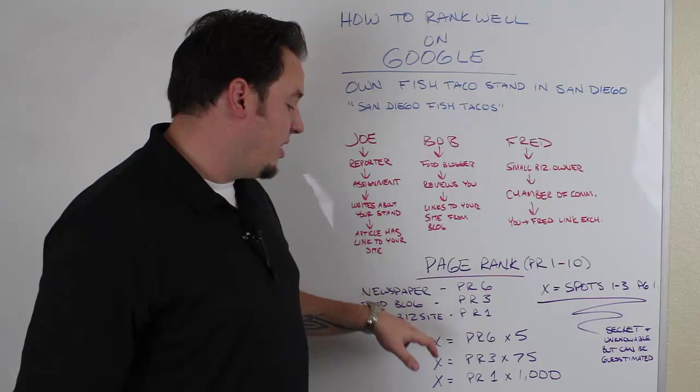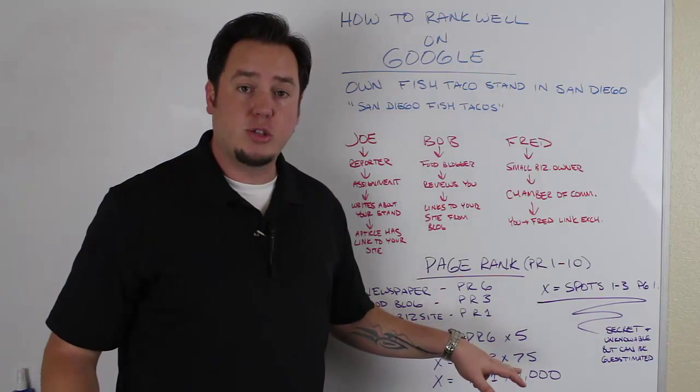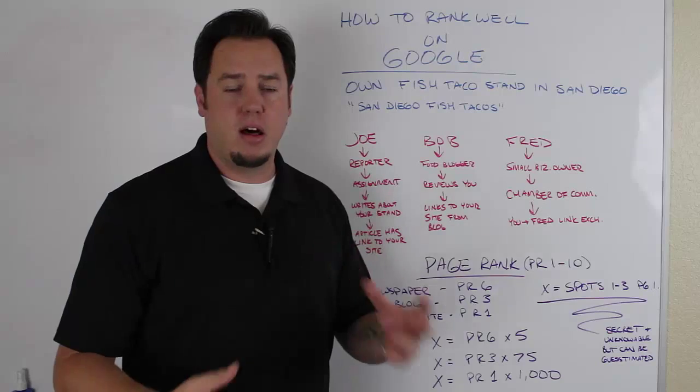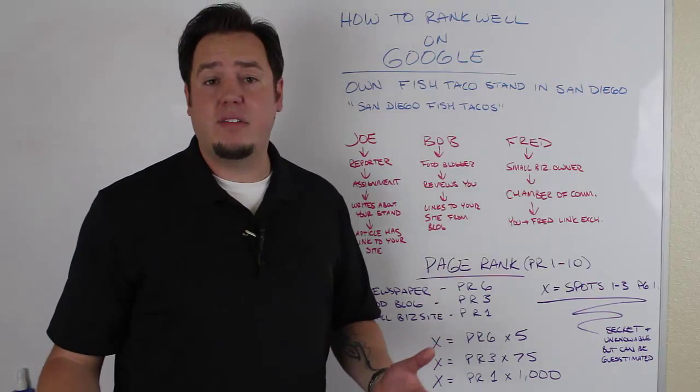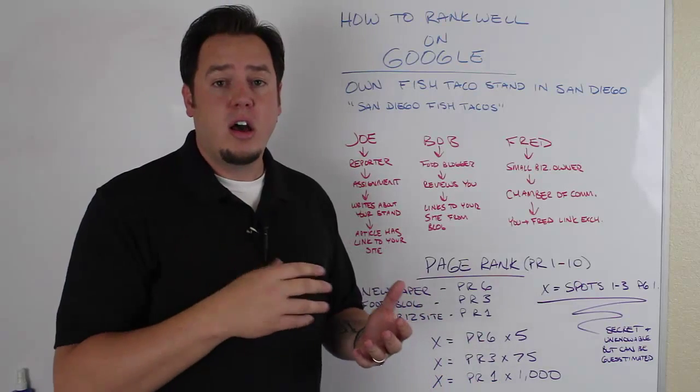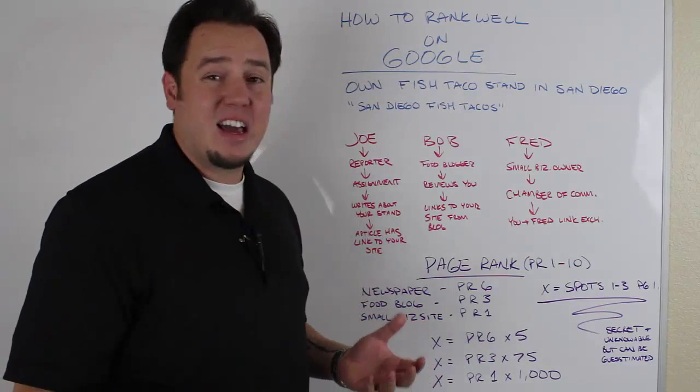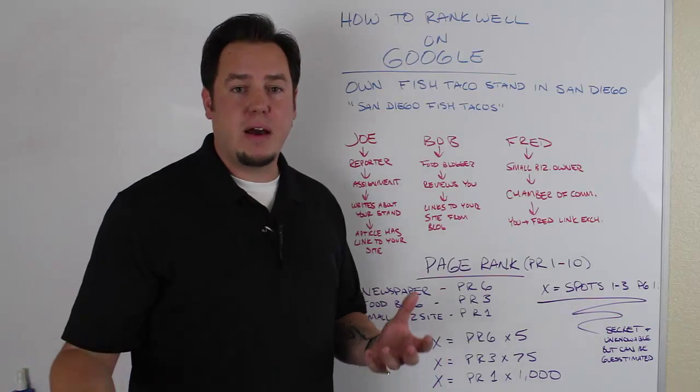To do the same thing using links from PR3 websites, page rank 3 websites, which is going to be small blogs and maybe established businesses, that might take 75 links. You don't know, I don't know. Google's algorithm is a secret.